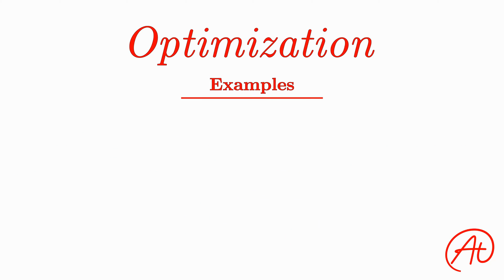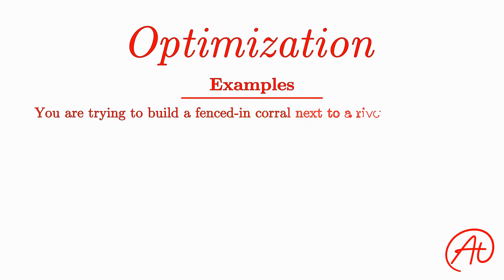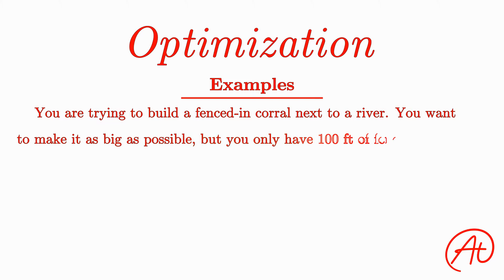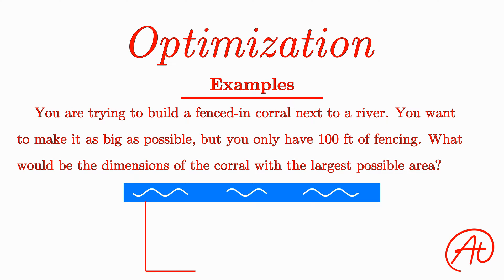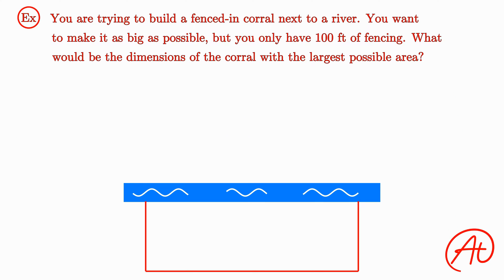Another example problem might be one where you are trying to build a rectangular fenced-in corral. Fortunately, you can place this corral next to a river, so you only need to fence in three sides. You want to make it as big as possible, but you only have 100 feet of fencing. What would be the dimensions of the corral with the largest possible area? To learn how to solve these types of problems, let's jump right into this example.